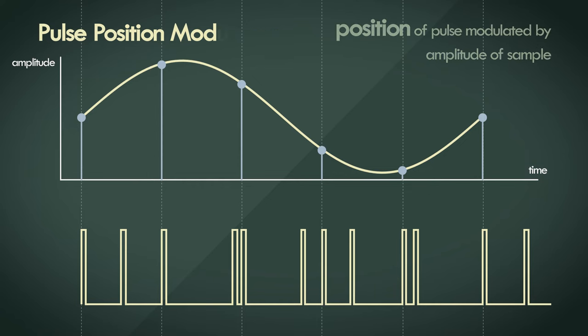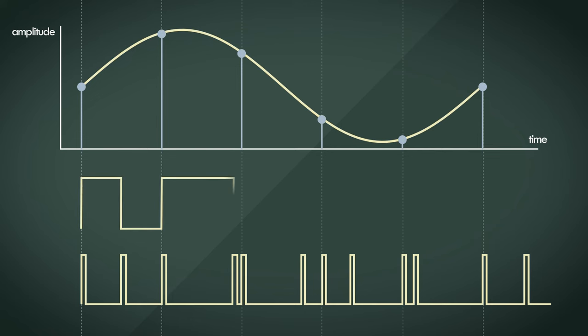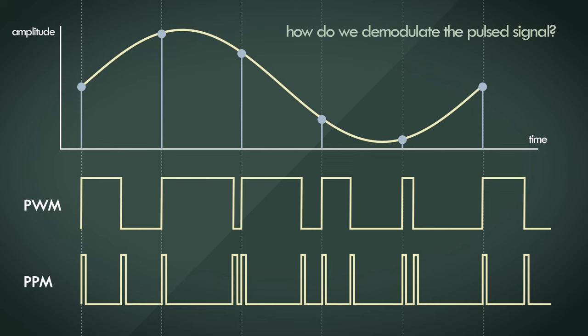Quite simple so far right? Each sample is represented as a single pulse with pulse width modulation, and as two pulses with pulse position modulation. Fair enough. But how can this encoded signal be demodulated? How do we take these series of pulses and determine the sample amplitude from it?